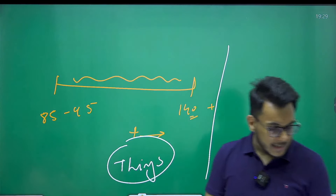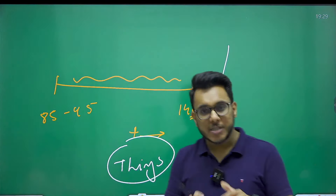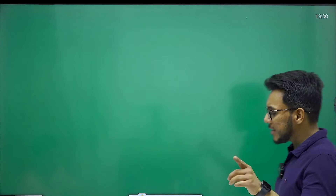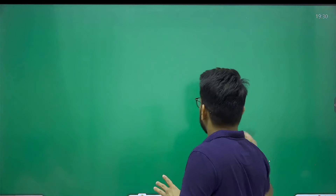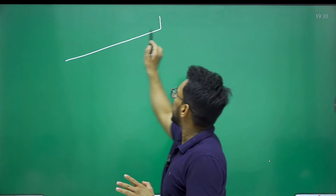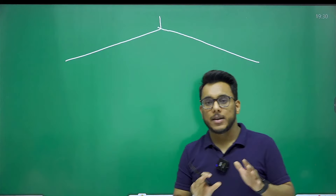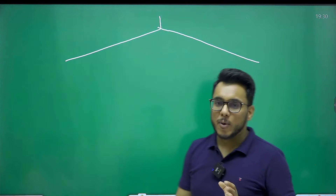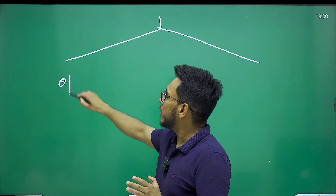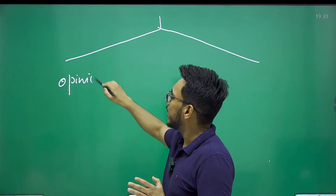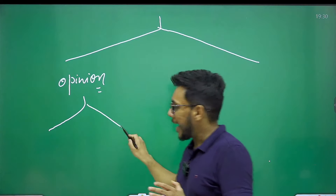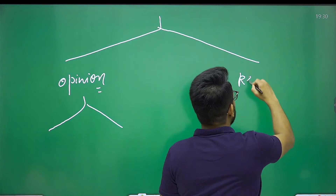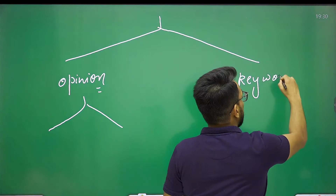Let us directly dive into the type of questions being asked. Now, first of all, you find that broadly there are two types of questions being asked in Section A, that is the theory part. First type of questions are opinionated questions, and second type of questions are keyword-based questions.